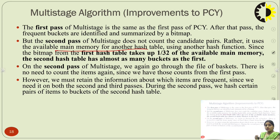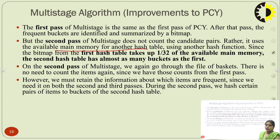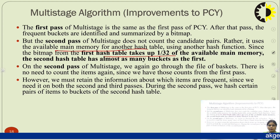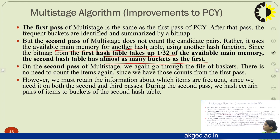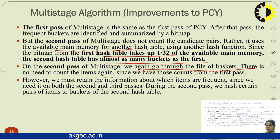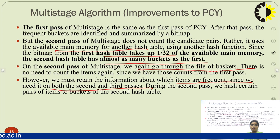In multistage we have multiple stages: in the second pass, the available main memory is used for another hash table using a different hash function. Since the bitmap from the first hash table takes up 1/32 of the available main memory, the second hash table has almost as many buckets as the first one. In the second pass we go through the file of baskets again; there is no need to count items again since we already have those counts from the first pass. We must retain the information about which items are frequent for both the second and third passes.